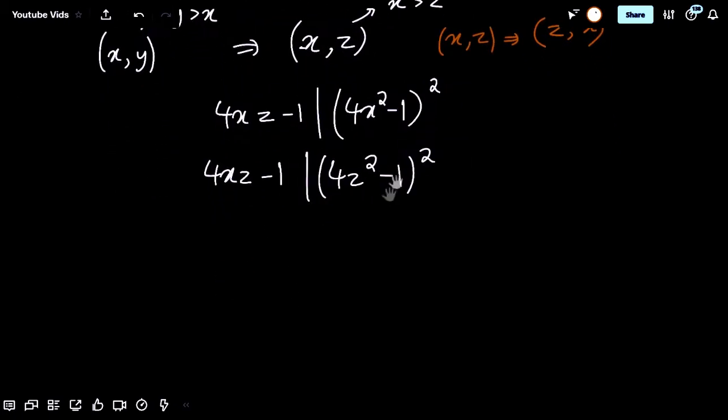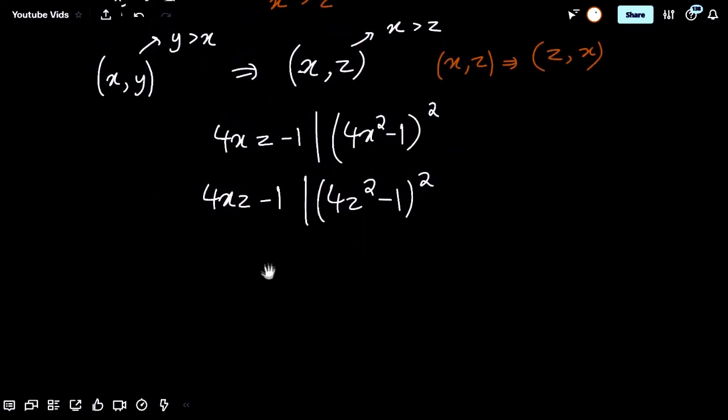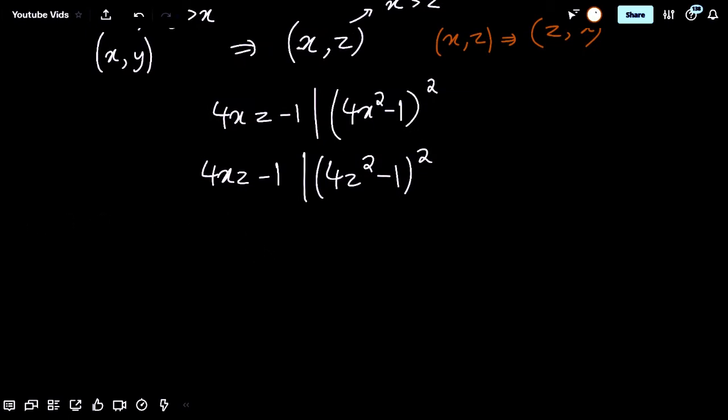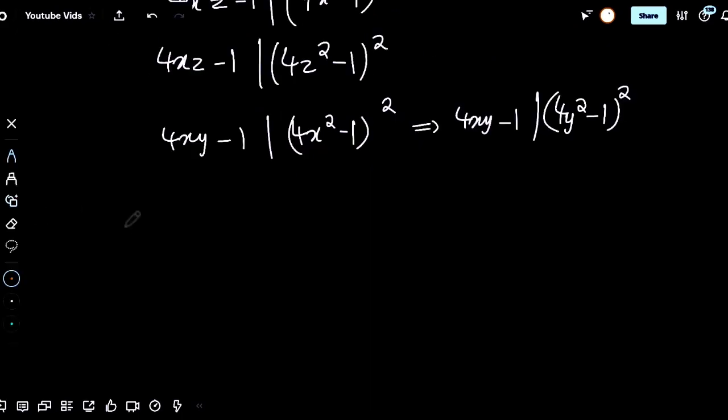And actually, this is where I myself got stuck. Because, we're going to do a very non-trivial trick now. Now, what we want to try to prove to perhaps use infinite descent is that if 4xy minus 1 divides 4x squared minus 1 whole squared, then 4xy minus 1 divides 4y squared minus 1 whole squared.